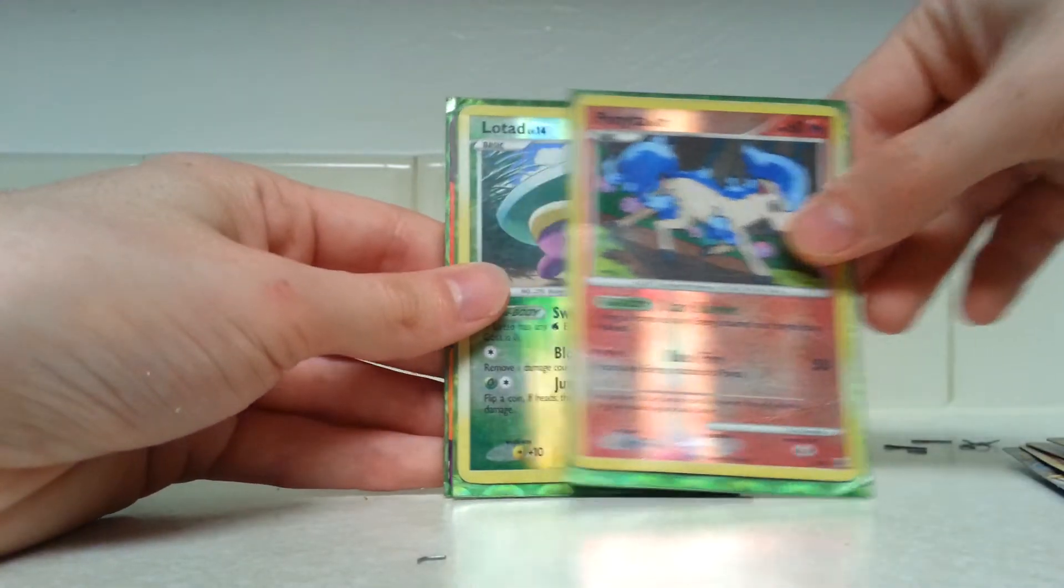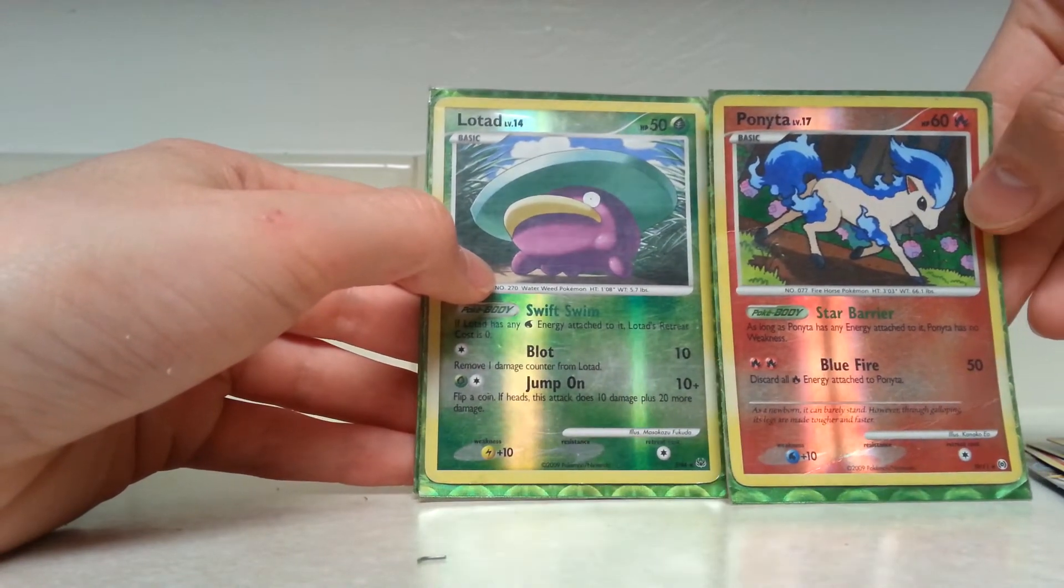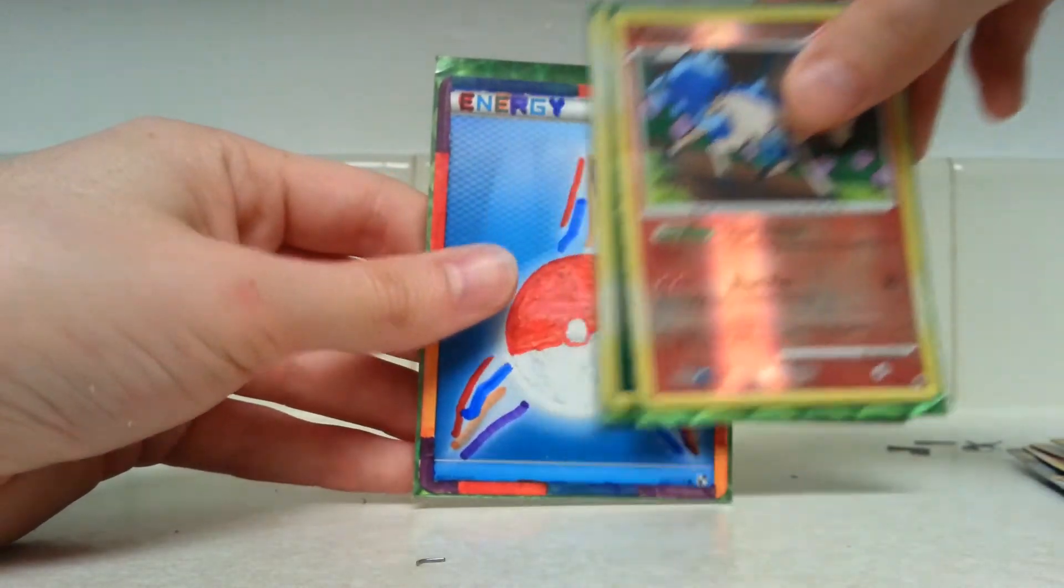Here we go. These are what I traded for. Ponyta and Lotad. Shinies. SH1 and SH4.